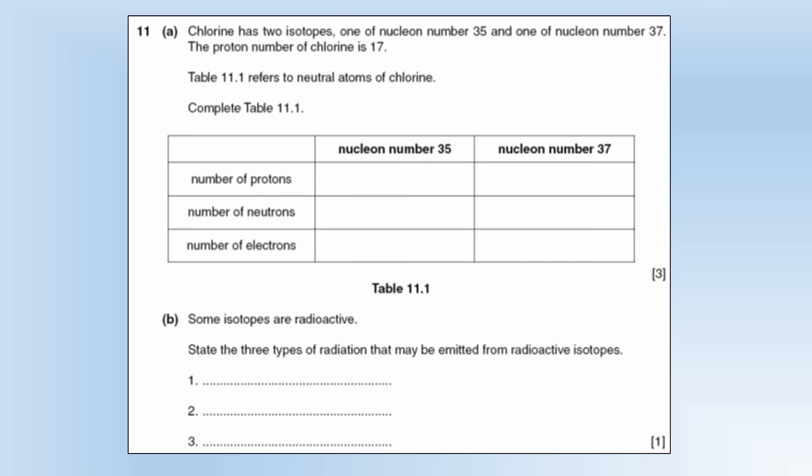So chlorine has two isotopes, nucleons 35 and 37. Proton number is 17. Fill in the table. So that means proton number of chlorine is 17, so in both cases the proton number is 17.